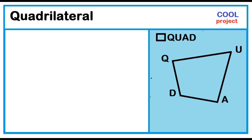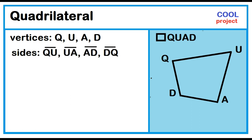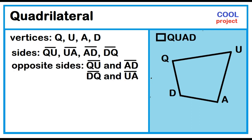The vertices are Q, U, A, and D. The sides are segment QU, segment UA, segment AD, and segment DQ. The opposite sides are segment QU and segment AD, and segment DQ and segment UA.